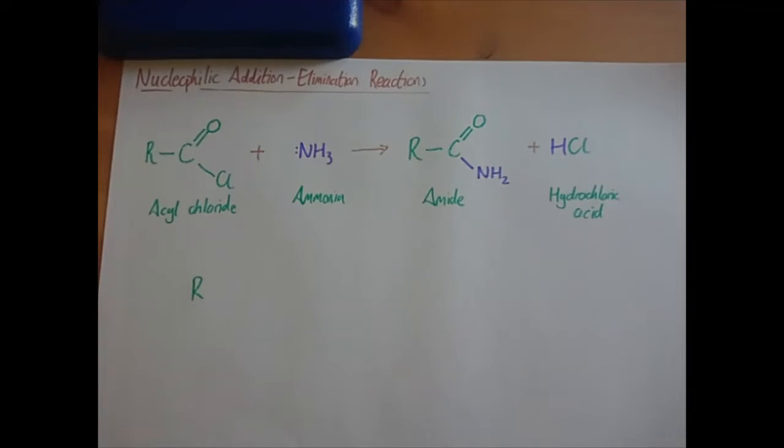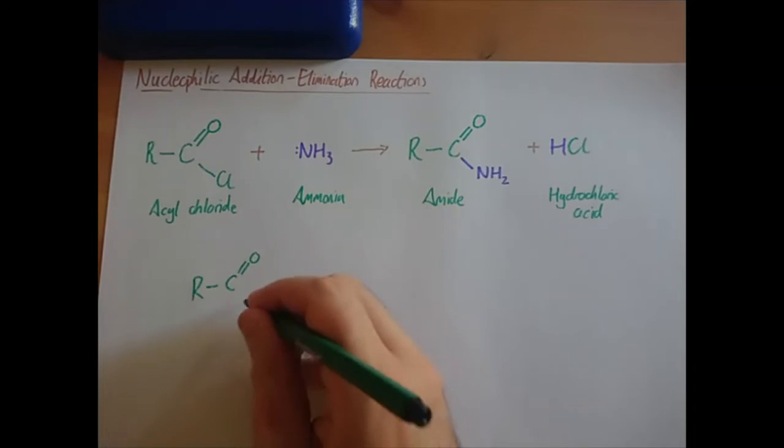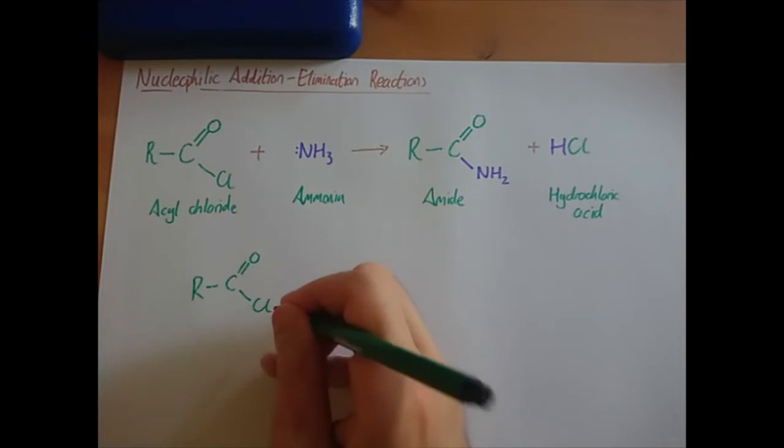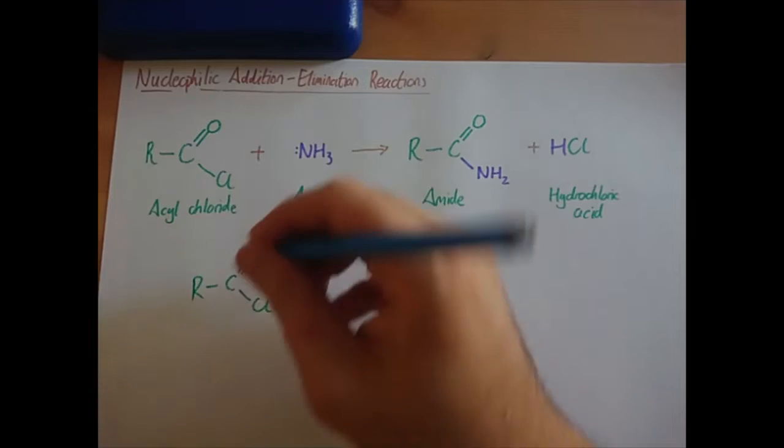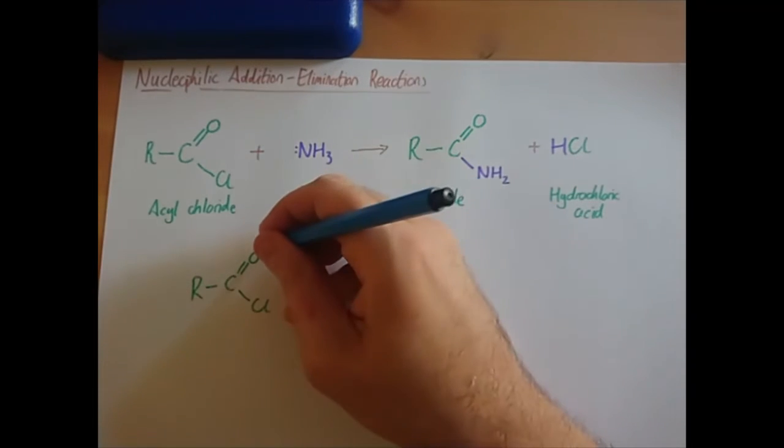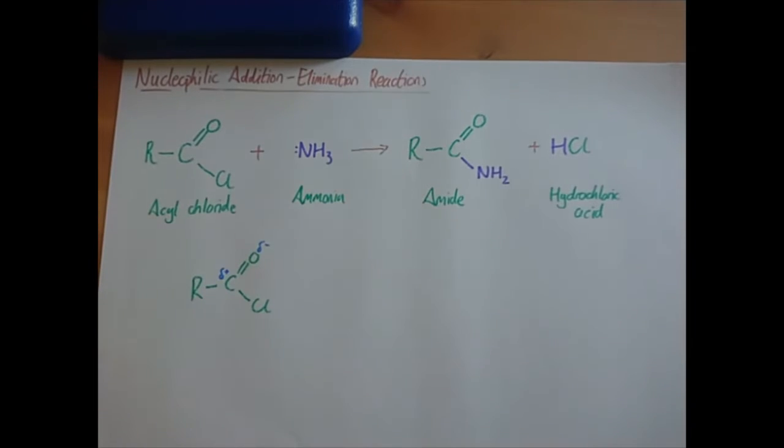We're just going to stick with an R group attached to the acyl chloride, so it doesn't actually matter what it is. Let's think about the partial charges on that. We know that oxygen is very electronegative, so that'd be delta minus, that will leave the carbon delta plus. We could do the same with the carbon and the chlorine. We also know from the name that it's nucleophilic, so we're looking for something with its lone pair that it can donate to the acyl chloride and something that can attack this positive carbon.